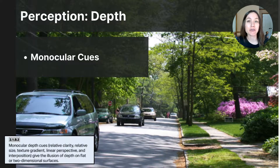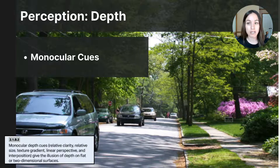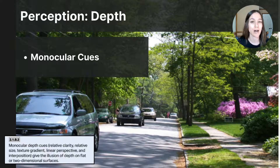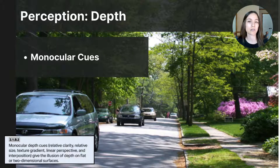You might be thinking: if binocular cues require two eyes, how can I tell that objects are farther or closer with just one eye open? The brain uses both binocular and monocular cues together. If you break down the word monocular, you have the prefix mono, meaning one, and the suffix ocular, referring to eye or the ability to see. Monocular cues are visual details in the environment that help us determine the depth of objects using just one eye — two eyes are not necessary for the brain to determine distance of objects in visual fields.